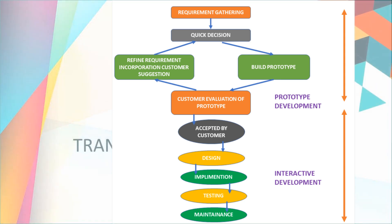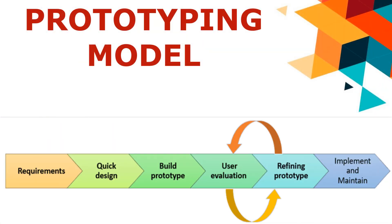Let's begin. The prototyping model is defined as a software development model in which a prototype is built, tested, and then reworked when needed until an acceptable prototype is achieved. It also creates a base to produce the final system. This model works in scenarios where the project's requirements are not known. It is an iterative trial-and-error method which takes place between the developer and the client.